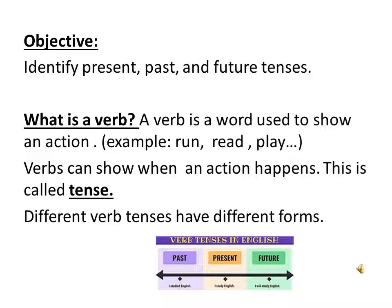The objective is to identify present, past and future tenses. Let's review together. What is a verb? A verb is a word used to show an action. For example, run, read and play. Verbs can show when an action happens. This is called tense.